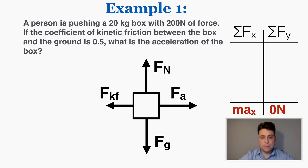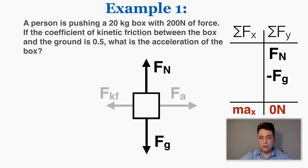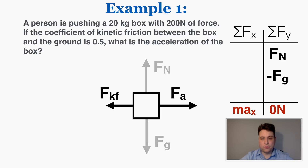Looking at what's happening in the y direction, I have a normal force up and a force of gravity down. If I put those into the y components of the table I can see that those two forces balance each other out to make zero. In the x direction I have the applied force forward and kinetic friction backwards, so that's how I would write them in my force table.